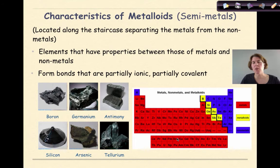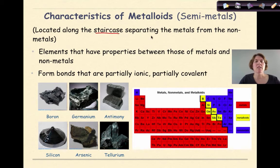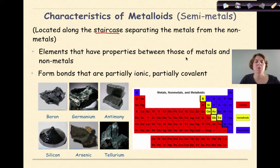Now let's talk about the metalloids, otherwise known as semi-metals. These include boron, germanium, antimony, silicon, arsenic, and tellurium. The metalloids are located along the staircase separating the metals from the non-metals. On a color-coded periodic table, metals appear red, non-metals blue, and metalloids yellow. Metalloids are elements that have properties between those of metals and non-metals — they'll have partially ionic or partially covalent bonds.